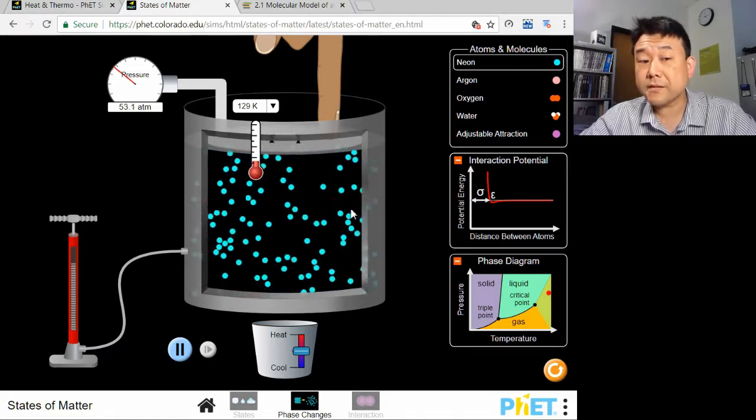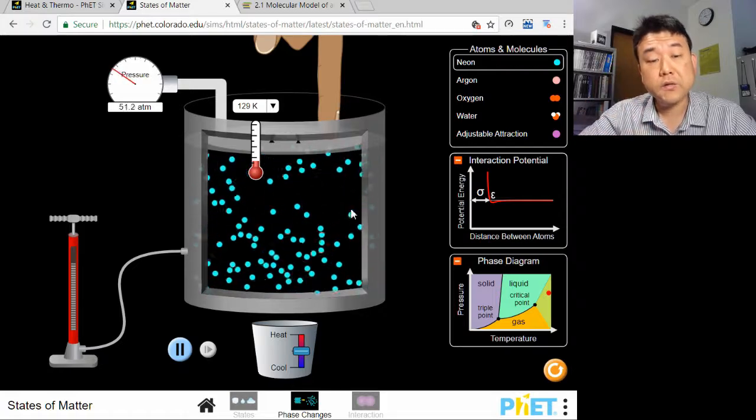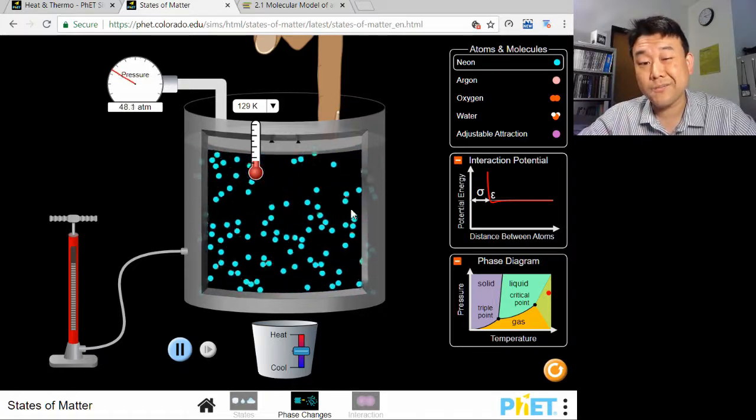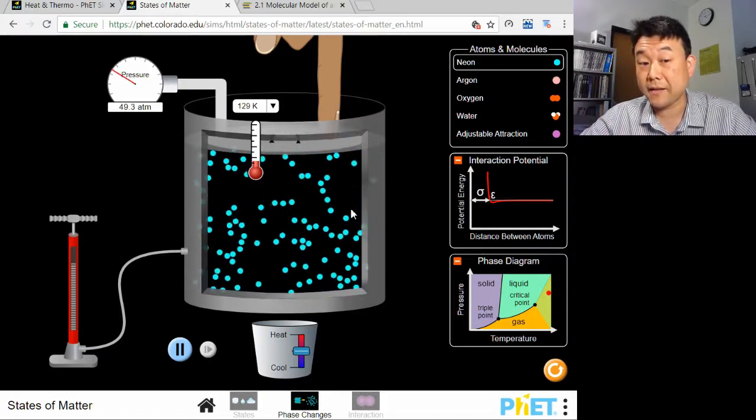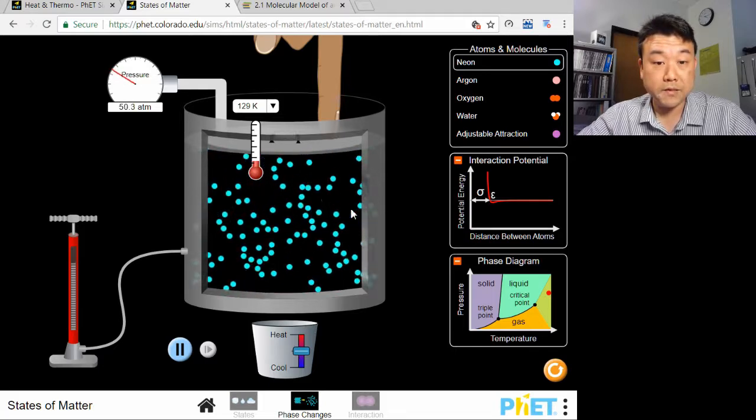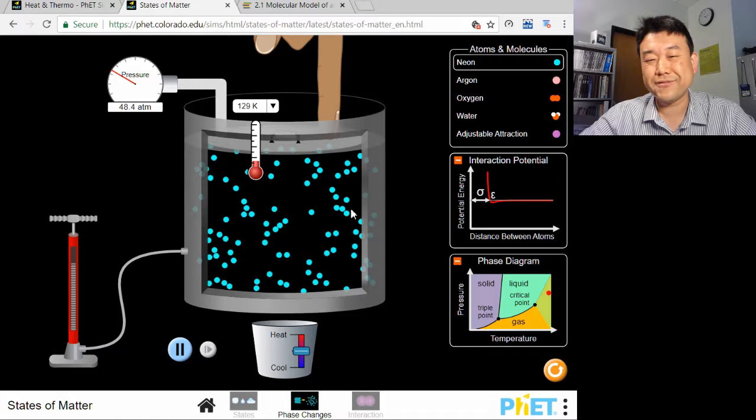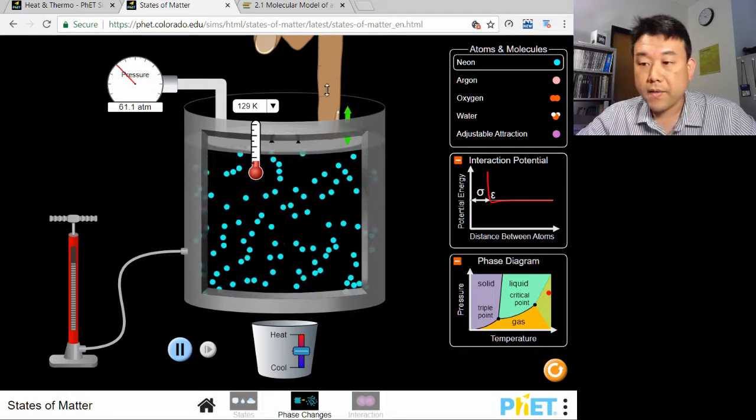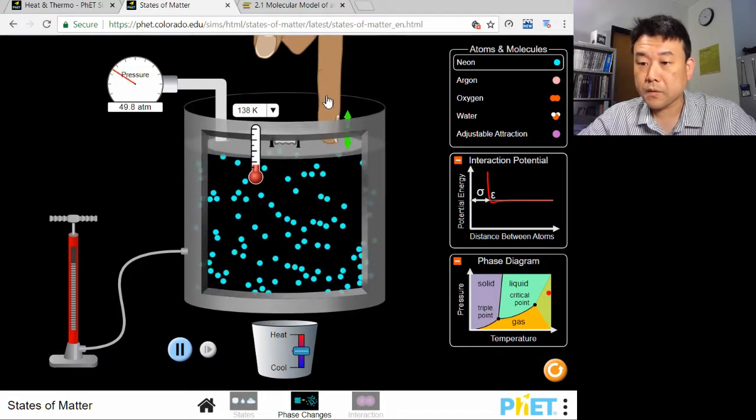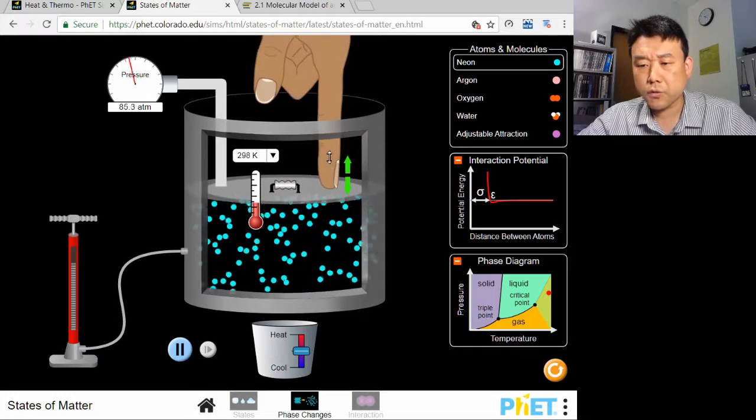You will see all the mathematical details in the second video, so we will hold off on the mathematical expressions until then. For now, while we have this simulation up, I want to point out one thing you will see soon enough in chapter 3. When I press the lid down, why does the temperature go up?